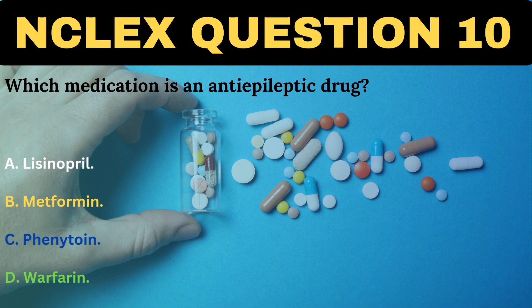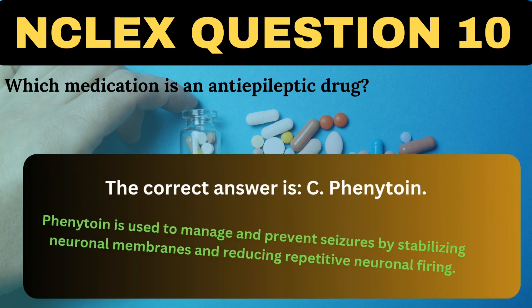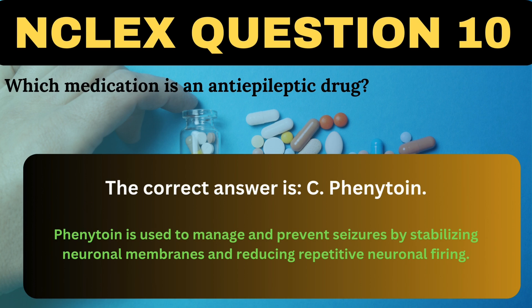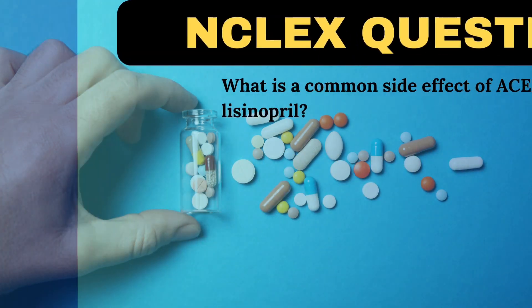Which medication is an anti-epileptic drug? A. Lisinopril. B. Metformin. C. Phenytoin. D. Warfarin. The correct answer is C, Phenytoin. Phenytoin is used to manage and prevent seizures by stabilizing neuronal membranes and reducing repetitive neuronal firing.